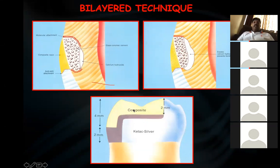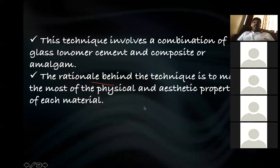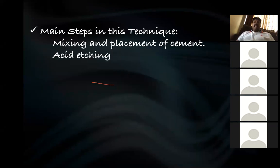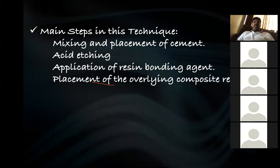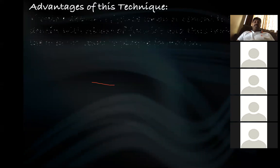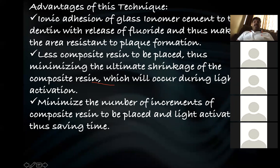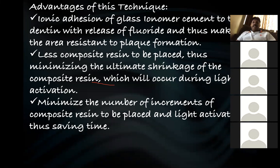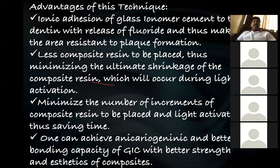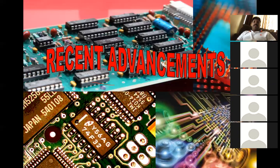The sandwich technique procedure: acid etch, apply bonding agent, place GAC as base, then place composite resin on top. Advantages: ionic adhesion of GAC to dentine, less composite resin needed, minimizes number of composite increments, achieves anti-cariogenicity and better bonding from GAC combined with the strength and aesthetics of composite.